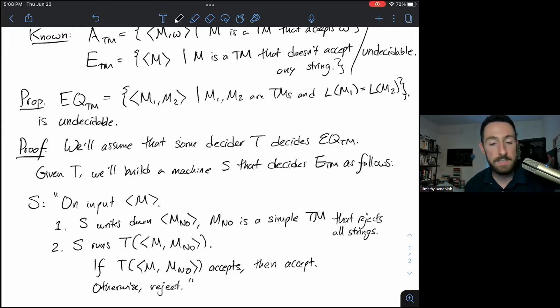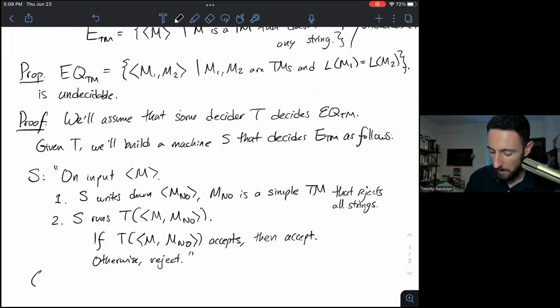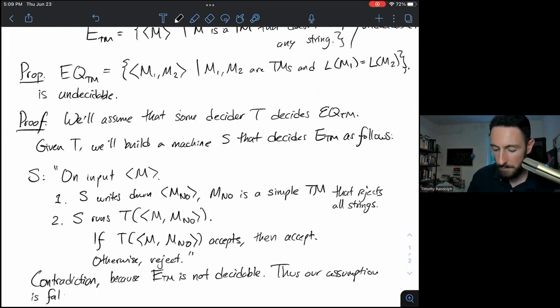They recognize the same language only if M recognizes the empty language because M_No does that. So if T(M, M_No) accepts, that means M must recognize the empty language. So we'll accept M as a member of ETM. That's an if and only if condition. So reject otherwise. And we know our simulation will stop because by assumption T is a decider. So this amounts to a contradiction. Because ETM is not decidable. Thus, our assumption is false. Thus, EQTM is undecidable.